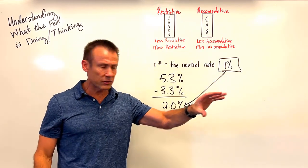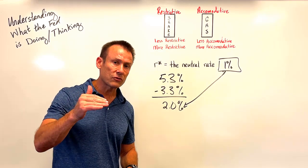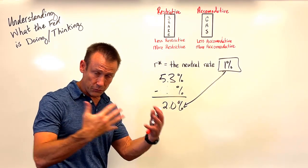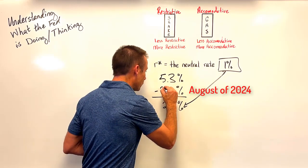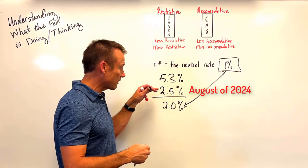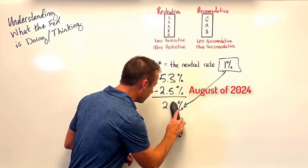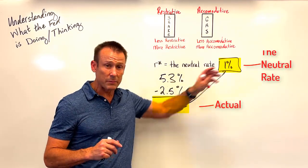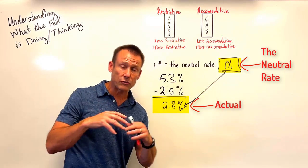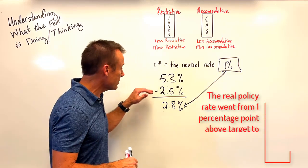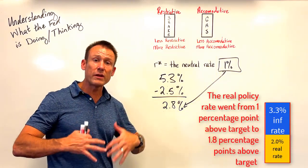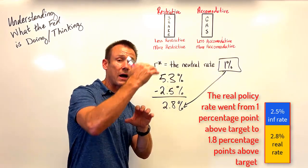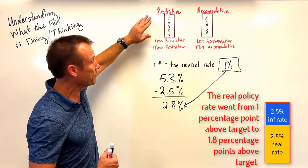They didn't change interest rates — this was their terminal rate — but the inflation rate began to tick down. It got all the way down to 2.5% by the August reading. So if you do the math now: 5.3% minus 2.5% means their policy rate in real terms was 2.8%. With the neutral rate at 1%, they were actually becoming more restrictive by doing nothing — just the inflation rate ticking down means the real interest rate goes up.